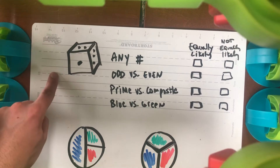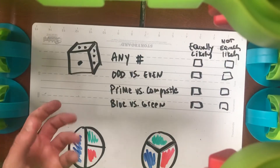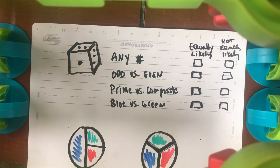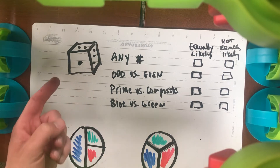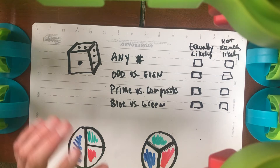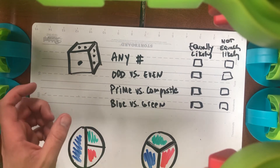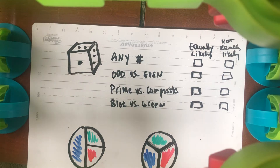Let's talk about a single die. If you roll a single die, is it equally likely that you could get any number? Well, there's one one, one two, one three, one four, one five, and one six, and they're all the same size on the die because it's a cube. So yes, that is a case where we are equally likely.